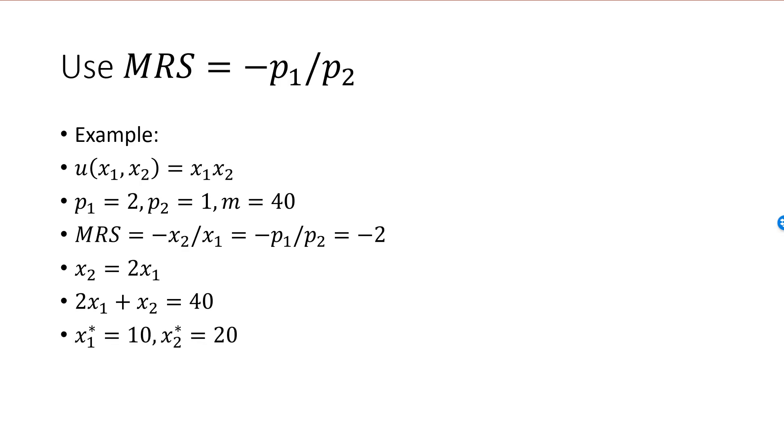We can solve this system in many ways, for example, by substituting x2 equal to 2x1 into the budget constraint. That will give us 2x1 plus 2x1 equal to 40, or 4x1 equal to 40, and we have x1 star equal to 10. Since x2 must be equal to 2x1 for an optimal bundle, x2 star is equal to 20. It's not possible to find any other affordable bundle providing a utility of 10 times 20 equal to 200 or higher.